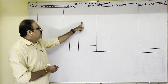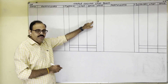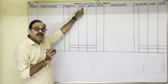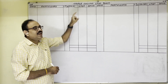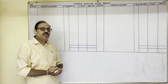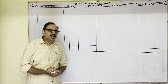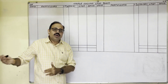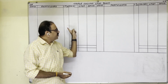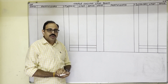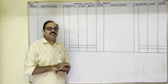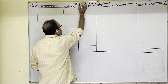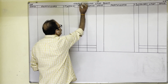We are preparing the cash account and the bank account. The cash account is a real account because cash is an asset. The rule for a real account is: debit what comes in, credit what goes out. So in the firm's books, if cash is coming in, we write it on the debit side in the cash column.